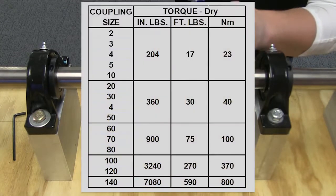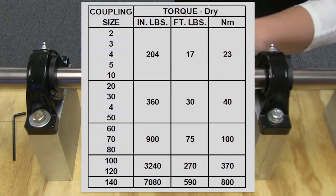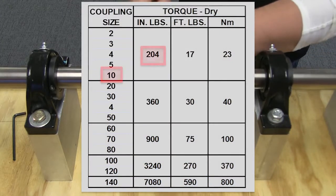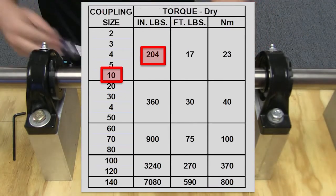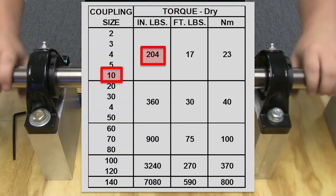Reference this table for appropriate cap screw torque instructions, which will be dictated by the size of your coupling. For example, we are installing a size 10 coupling, so the correct torque rating for the cap screws of this coupling would be 204 inch-pounds.